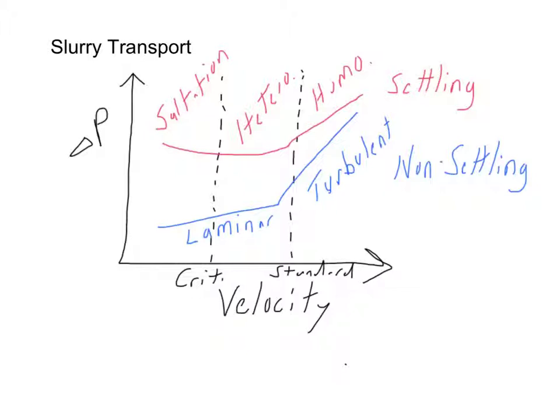For non-settling slurries, we simply have laminar flow and turbulent flow. These tend to be for much smaller particles, hence there also tends to be a much lower pressure drop than compared to the settling velocities.